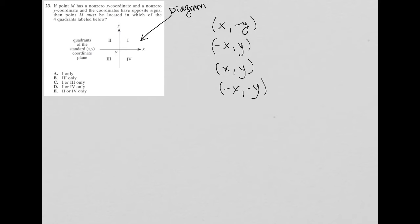And the coordinates have opposite signs. Okay, so they have opposite signs. That means that these two options are gone. So it's really only these two options.